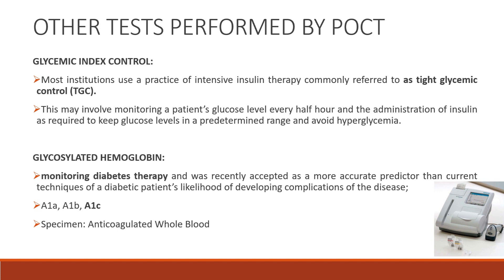There are three types of hemoglobin: A1A, A1B, and A1C. A1C is the glycosylated hemoglobin. The specimen that should be collected for testing glycosylated hemoglobin is anticoagulated whole blood.